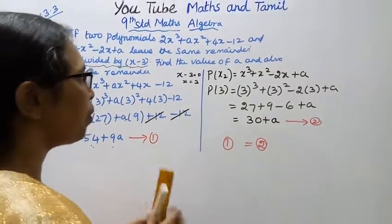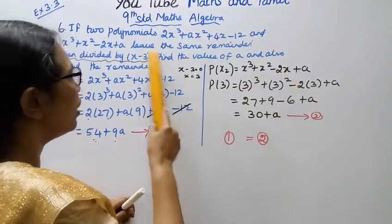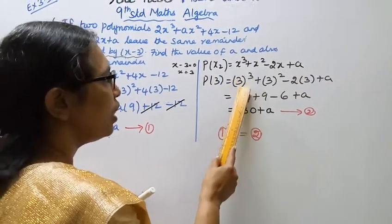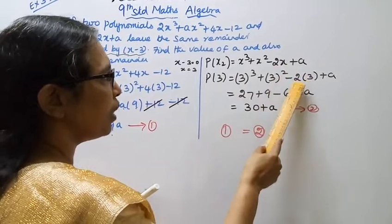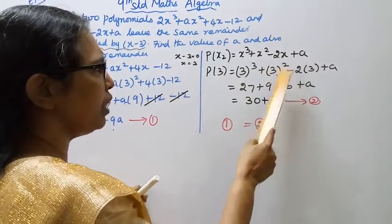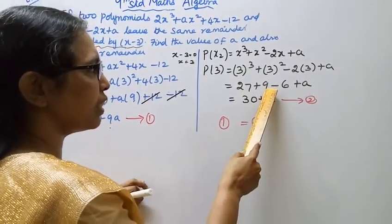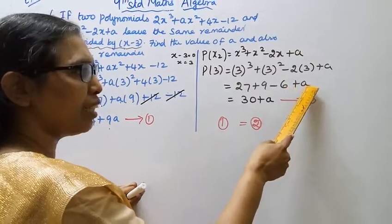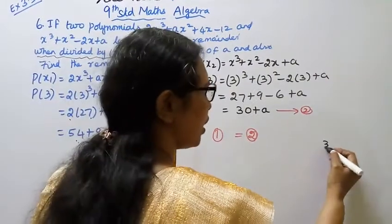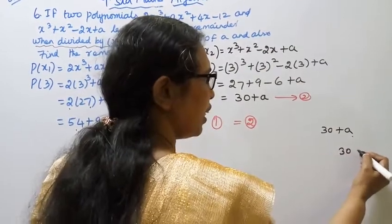For the second polynomial, substituting x = 3: 3³ + 3² - 2 into 3 + a. That is 27 plus 9 minus 6 plus a, which gives 36 minus 6 equals 30 plus a.